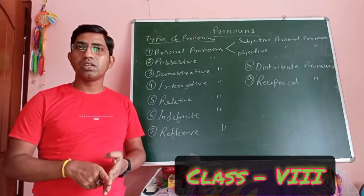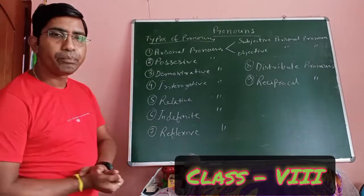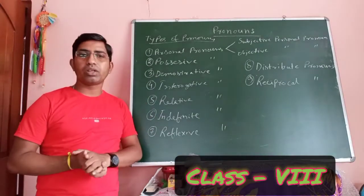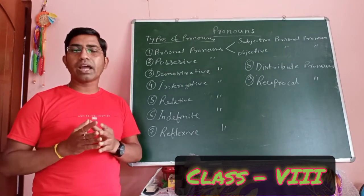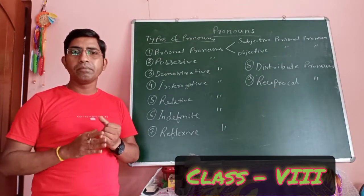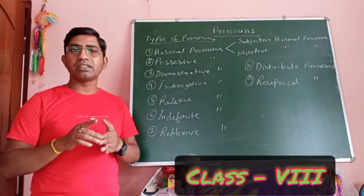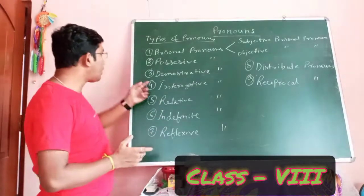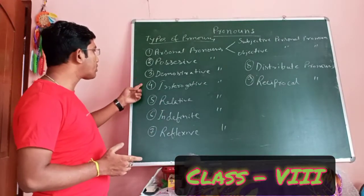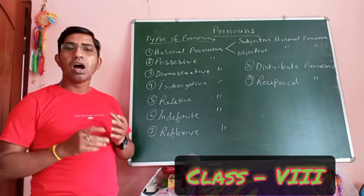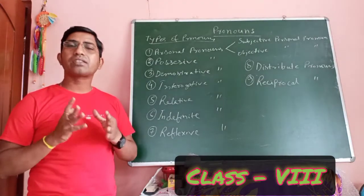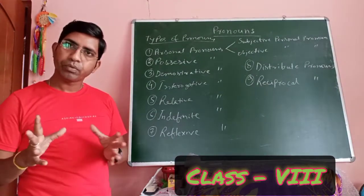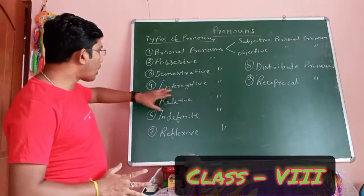Next, possessive pronouns are words that refer to possession — like mine, ours, yours, his, hers, etc. Next, demonstrative pronouns are words that identify a noun in a sentence — for example, this, that, these, and those. Next, interrogative pronouns are words used for asking questions — like who, whose, whom, what, etc.